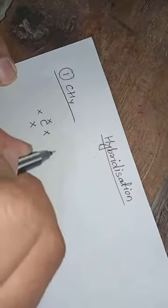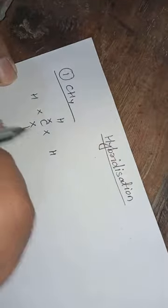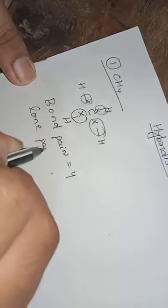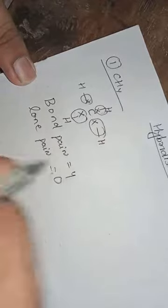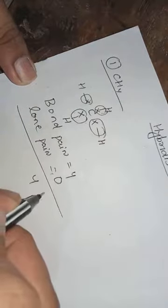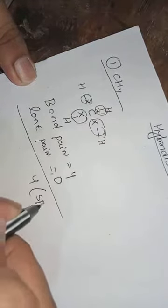We have 4 hydrogen bonds. So here, bond pair. How much is bond pair? One, two, three, four. Bond pair is equal to 4 and lone pair is equal to 0. So this is 4. 4 means SP3. I will give you a chart.